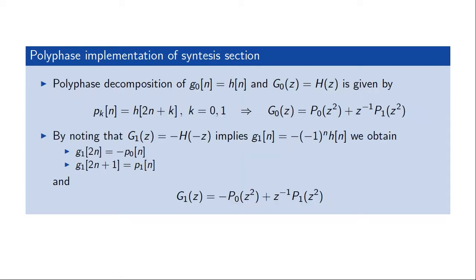We can do the same for the synthesis section. The first low-pass filter G0 used for interpolation is also given by the base filter, so the polyphase components are exactly the same. For the high-pass filter G1 used in interpolation, there is a minus sign compared to the analysis high-pass filter. This minus changes the sign of the polyphase components, so we still have a different sign between P0 and P1, but the minus is in front of the P0 component rather than P1.